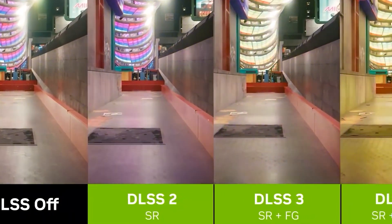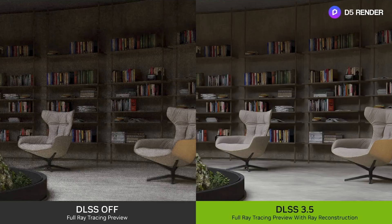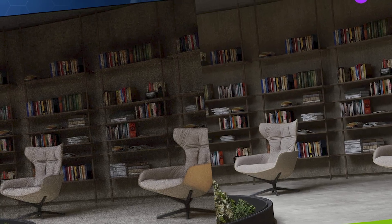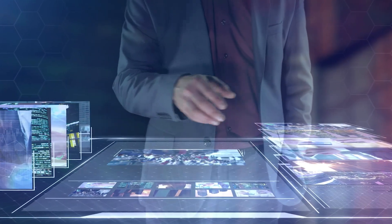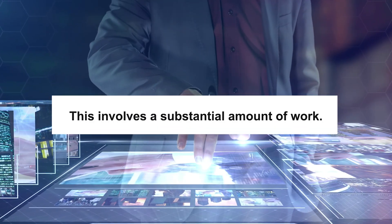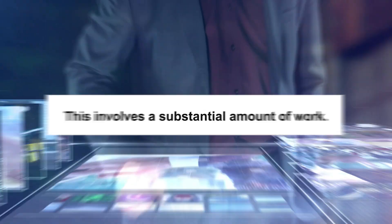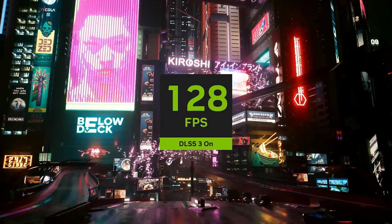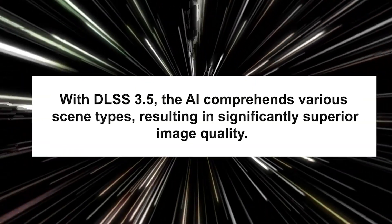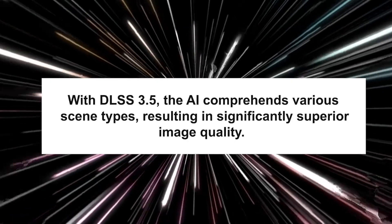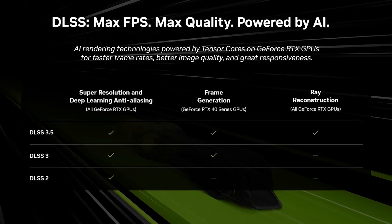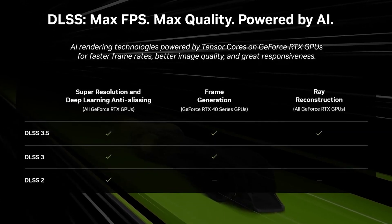Reflections are notably sharper and more refined, even during motion. Simultaneously, creative applications will also reap benefits. These applications contain extensive content, posing challenges for conventional denoisers due to the need for manual tuning in each scene — a substantial amount of work. Additionally, the image quality generated often falls short of expectations. However, with DLSS 3.5, the AI comprehends various scene types, resulting in significantly superior image quality. Hence, DLSS 3.5 offers numerous AI-powered options to boost performance and elevate quality.